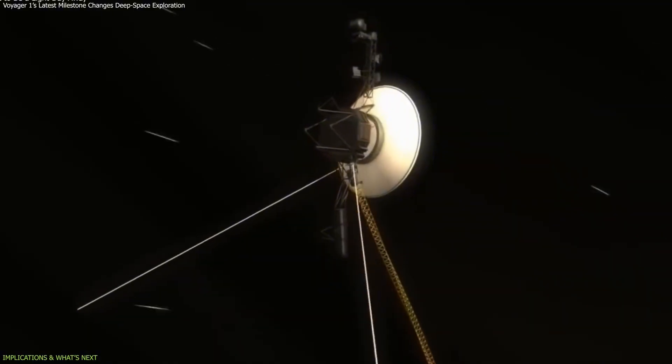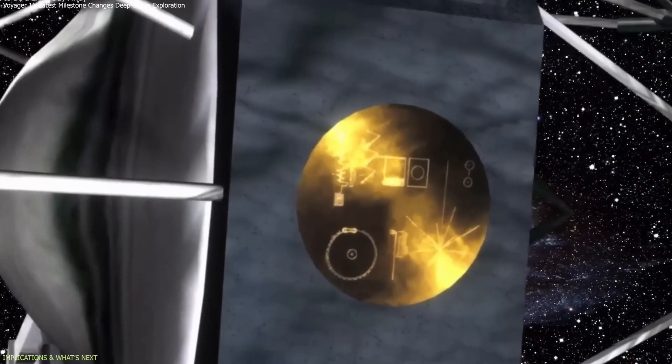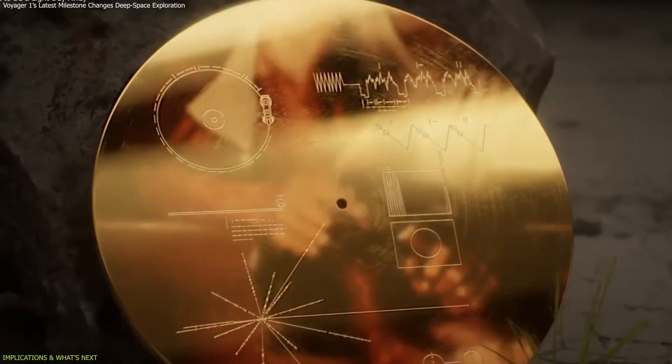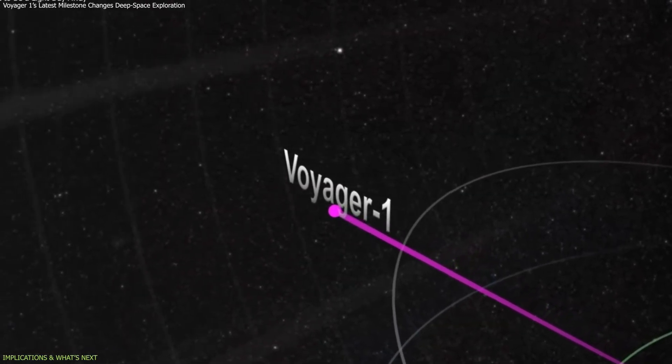Finally, the milestone carries a symbolic dimension. Voyager 1 continues its journey with the Golden Record onboard, a message intended for any civilization that might encounter it.